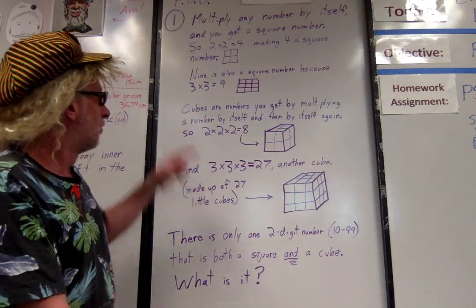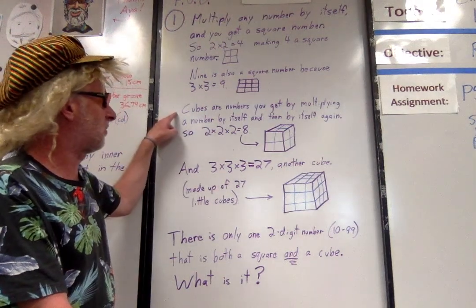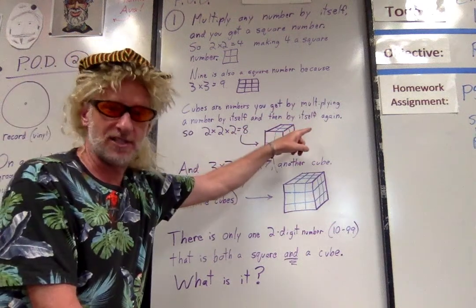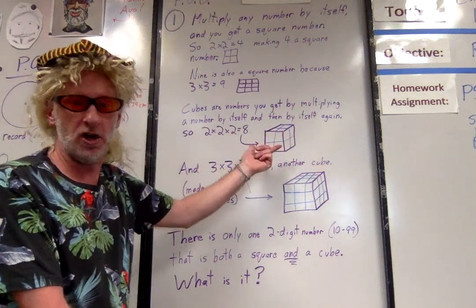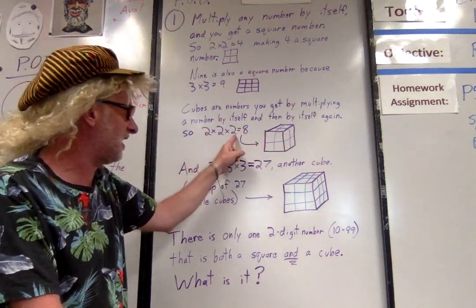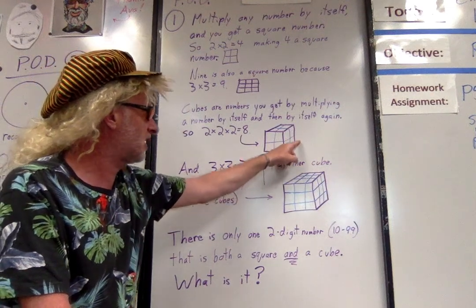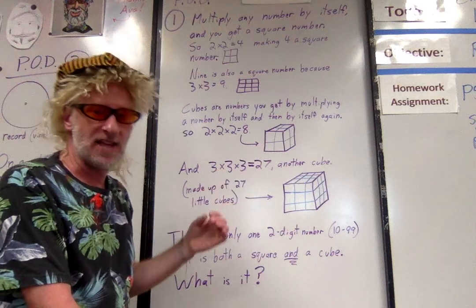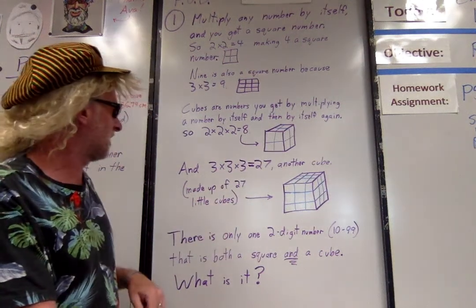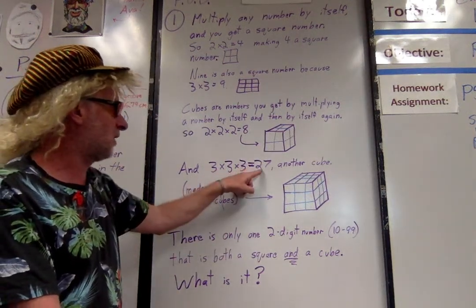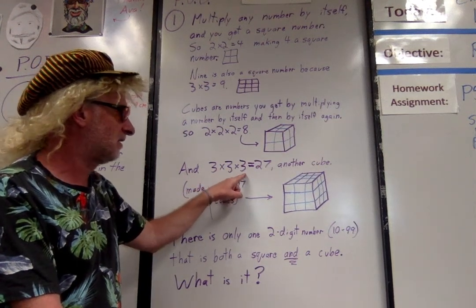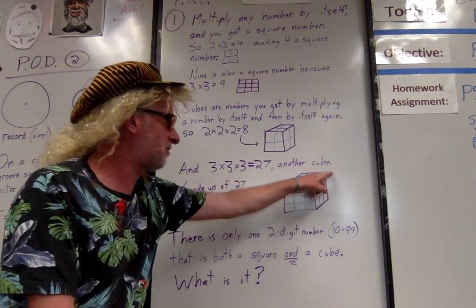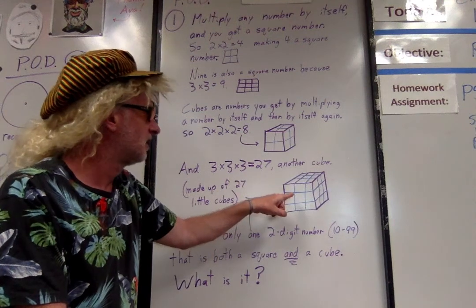Well what about cubes everybody? Cubes are numbers you get by multiplying a number by itself and then by itself again. It's kind of like finding volume: length times width times height. Two by two by two is eight, that makes eight a cube number everybody. Same thing with the number 27. Three times three times three, 3 by 3 by 3. Hey that looks like a Rubik's cube doesn't it? Gives you 27, so 27 is what we call a cube number.